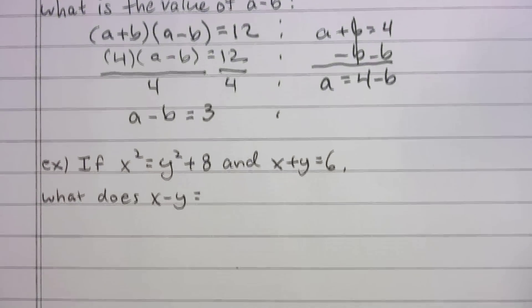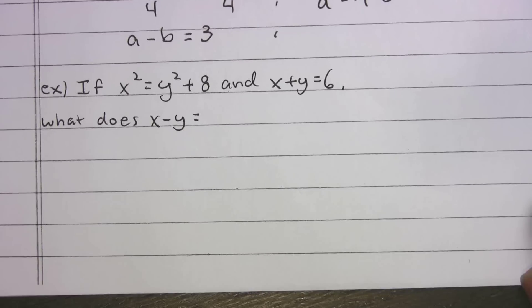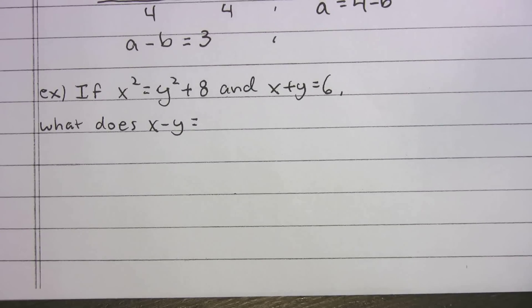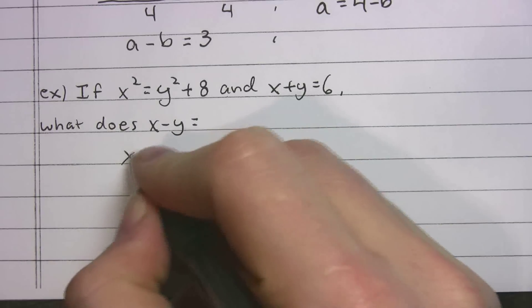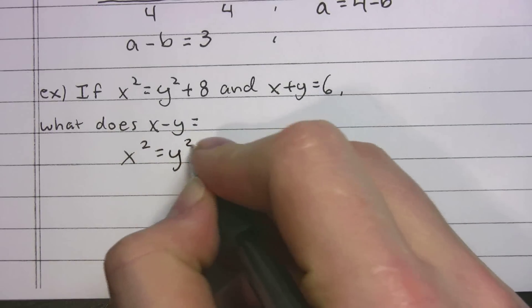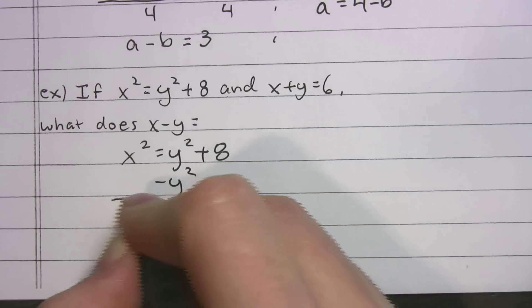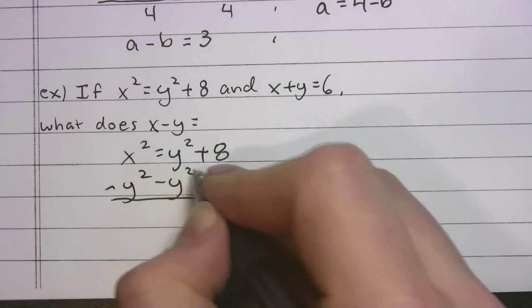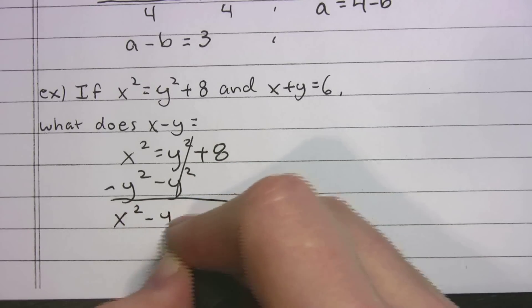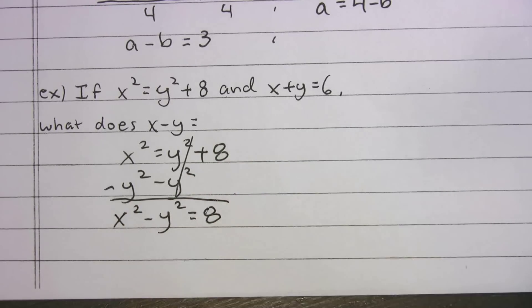Let's do another one. If x squared equals y squared plus 8 and x plus y equals 6, what does x minus y equal? You can pause the video here if you want to try it on your own. I'm going to go into the explanation. Let's rewrite this. x squared equals y squared plus 8. I'm going to subtract the y squared from both sides, and you'll see why in a second. Because we get x squared minus y squared equals 8. That's our difference of two squares.